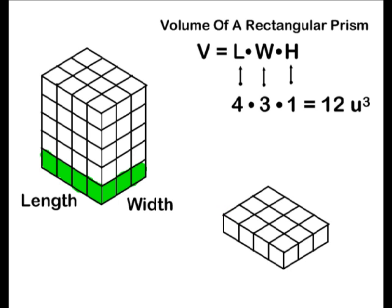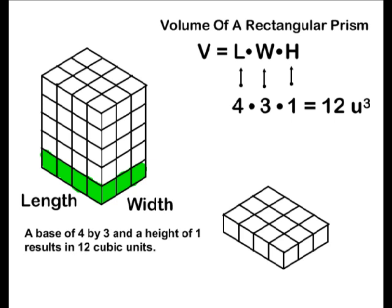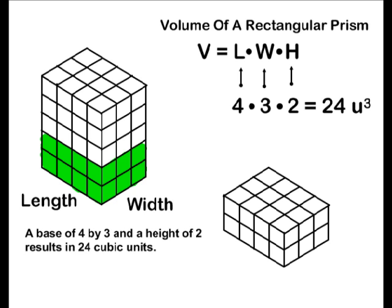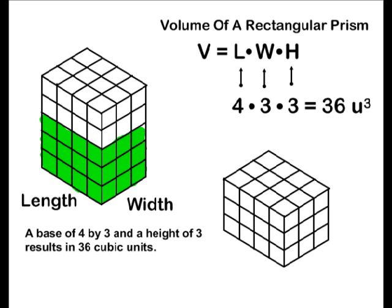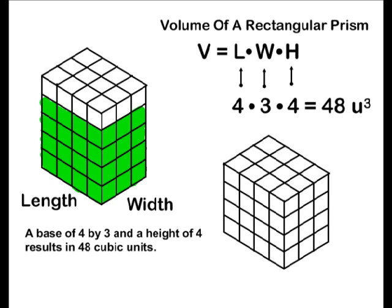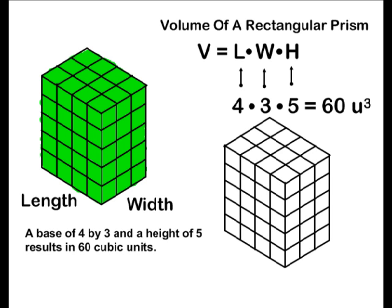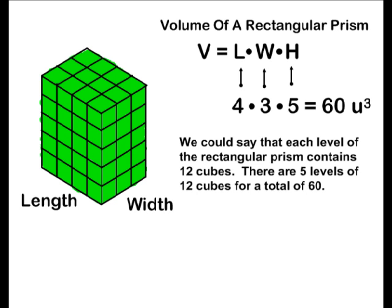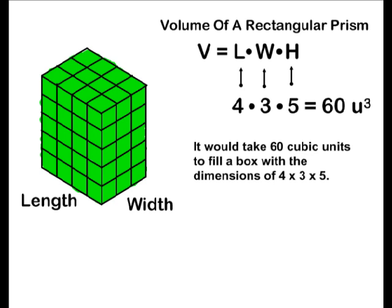This would be how many cubes it would take to make one level of our rectangular prism. Adding two levels of 12, we would get a total of 24 cubic units. Three levels of 12 would give us 36, four levels of 12 give us 48 cubic units, and of course, five levels of 12 would give us 60 cubic units. We could say that each level of the rectangular prism contains 12 cubes. There are five levels of 12 cubes for a total of 60.